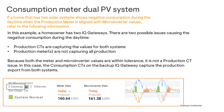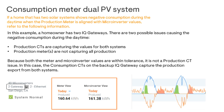In this example, a homeowner has two IQ gateways. There are two possible scenarios that can result in negative consumption during the daytime. One scenario is if the production CTs are capturing the values for both systems. The other scenario is if the production meters are not capturing the total production from both PV systems. You'll need to compare microinverter values against meter values and adjust if needed. Check out the link in the show description for instructions on how to compare microinverter values and meter values.